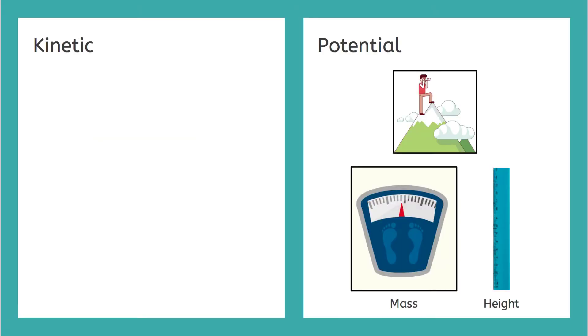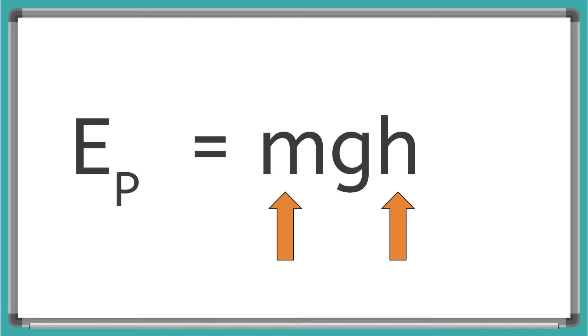And remembering our energy checklist, the two things that potential energy depends on are mass and the height of the object. So from the equation, we can see how energy depends on these two things: the m or the mass of the object, and the h is the height of the object off the ground.